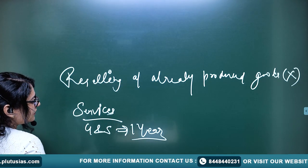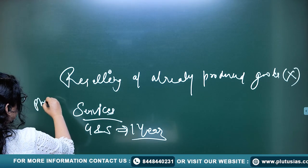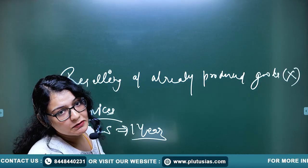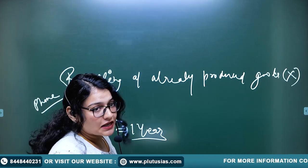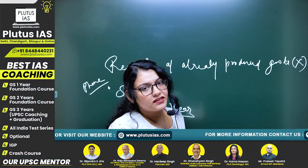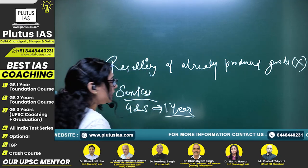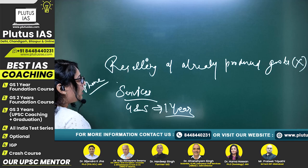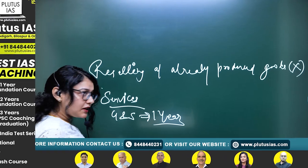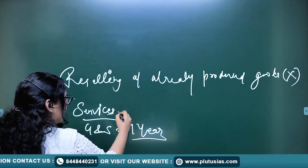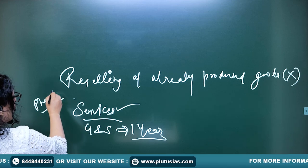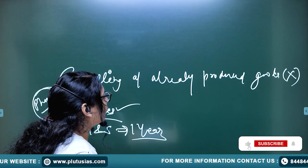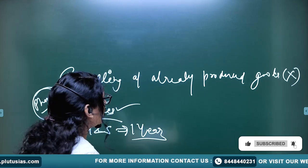Reselling of already produced goods — goods that have already been calculated in India's GDP — will not be calculated again. However, the services involved in reselling will be included because those services are newly produced. For example, if you bought a mobile phone, its production was calculated in GDP at that time. But if you resell it, only the services generated in the buying and selling process are added to GDP — not the phone itself, to avoid double counting.